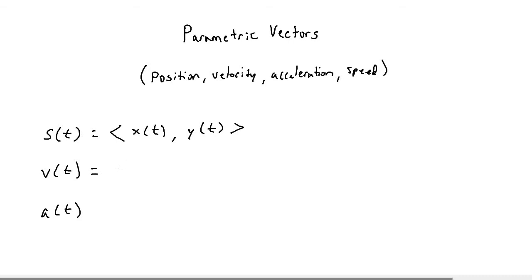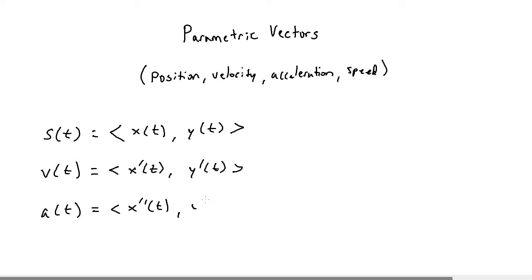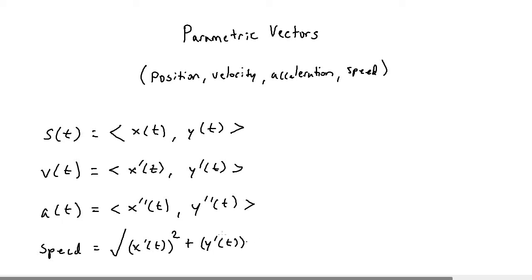If you want to calculate your velocity vector, it's going to be the derivative of your x function — so x prime of t, or dx/dt — and y prime of t, or dy/dt. For acceleration, it's going to be the second derivative: x double prime of t and y double prime of t. Speed is the only one that will be fairly new. To calculate speed, it's equal to the square root of x prime of t squared plus y prime of t squared. The reason the formula is set up this way is because speed is the magnitude of velocity, so you have to factor in both the x and y coordinates of velocity.